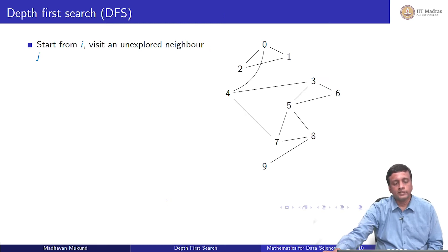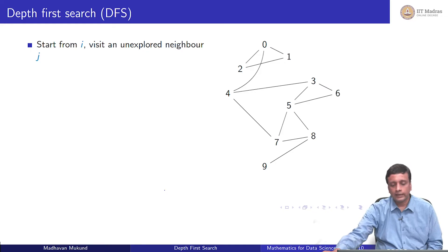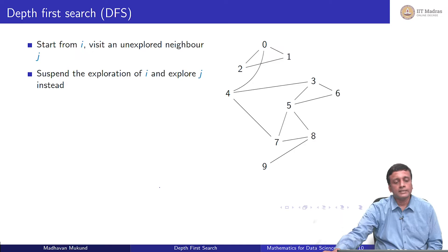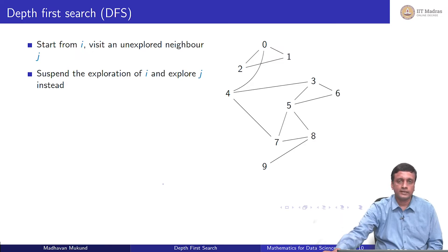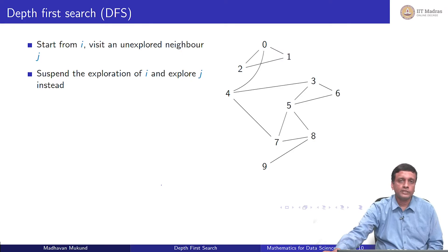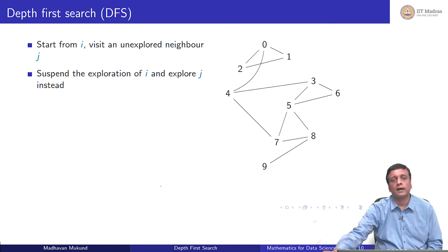In depth first search, we start from a vertex i and we pick any one of its neighbors that has not been explored. In breadth first search we pick all its neighbors and put them into a queue. Here we pick any unexplored neighbor j, suspend the exploration of i, and start exploring j instead. We then look at j's neighbors, suspend j, and keep doing this until we run out of vertices we can reach down this path.